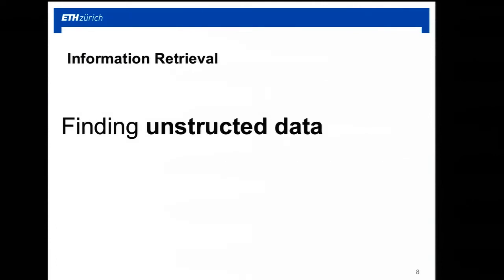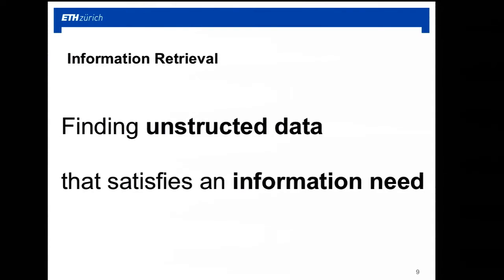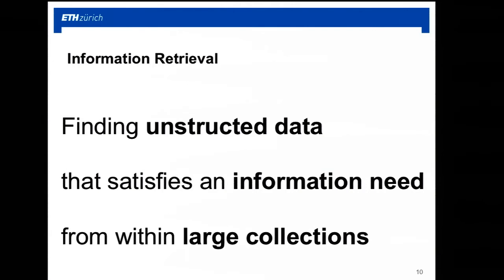Information retrieval is about finding unstructured data — no tables, no trees, no graphs, just text, or images, videos, and so on, but unstructured. It satisfies an information need, because you always have to think in terms of use case. When you design a system, you have to ask yourself what it's going to be used for. The need is: we have a huge library or collection of books, texts, videos, images, and we have people that want to look for something. Otherwise, we wouldn't have a search engine worth hundreds of billions of dollars on the stock market. And it is within large collections, because the whole point of searching information is that it's hard to find.